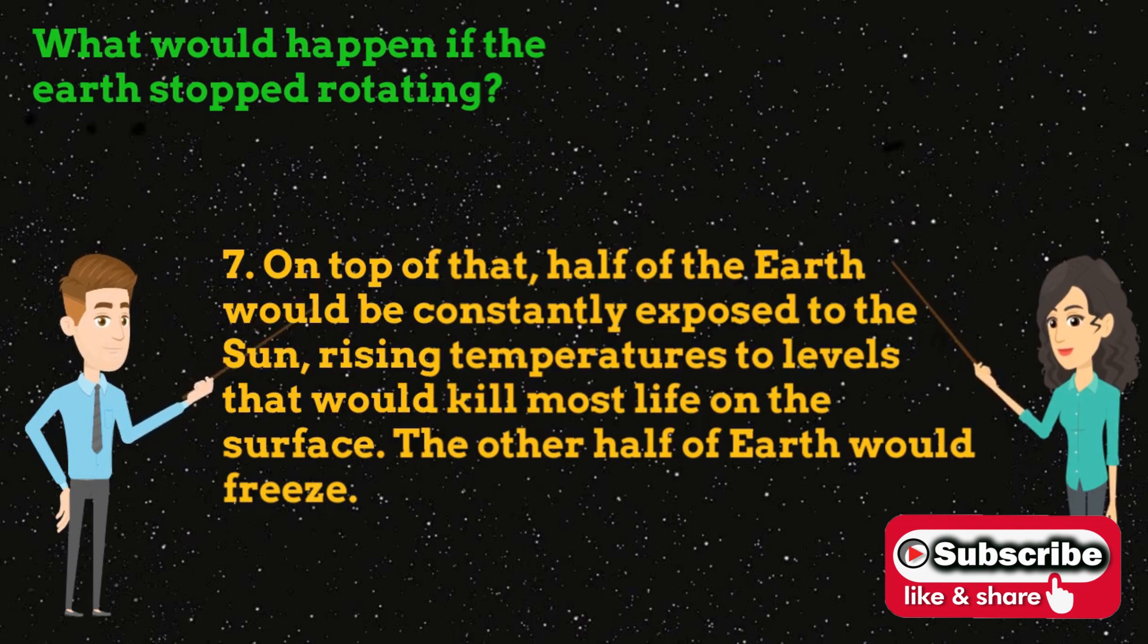Number 7: On top of that, half of the Earth would be constantly exposed to the sun, rising temperatures to levels that would kill most life on the surface. The other half of Earth would freeze.